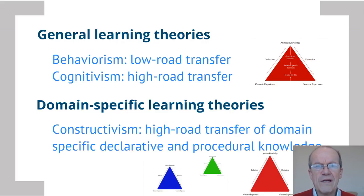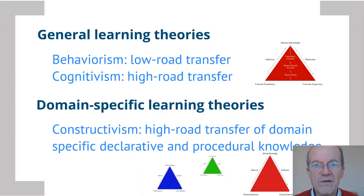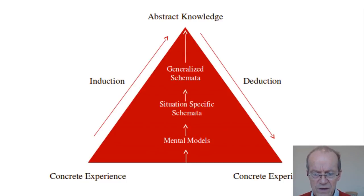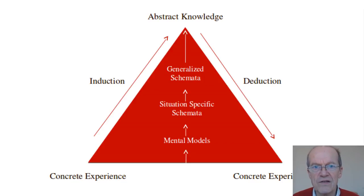Gradually, they started to discover that this was a fruitless attempt. Just focusing on learning and teaching: behaviorism emphasized low road transfer, whereas cognitivism also made room for high road transfer. This was the learning triangle discussed earlier, based on the work by Salomon and Perkins, where you can try to generalize from concrete experience to concrete experience, gradually extending the generalizability of acquired skills and knowledge — that's the low road transfer line.